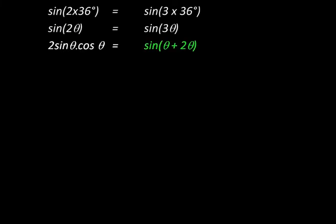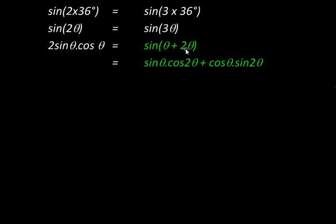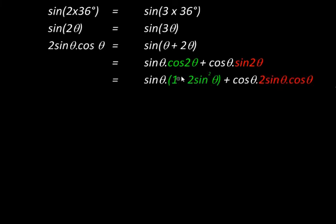The right-hand side expands as sine θ times cos 2θ plus cos θ times sine 2θ. Then in this expression we take cos 2θ and sine 2θ and expand them further. So cos 2θ can be written as 1 minus 2 sine squared θ, while sine 2θ expands to 2 sine θ cos θ.